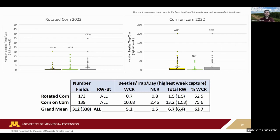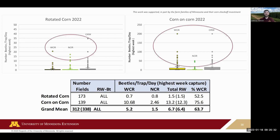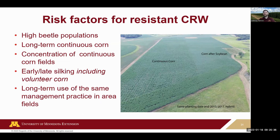Bruce has a good table summarizing what happens with continuous versus rotated corn. You can have up to about 10 beetles per trap per day in continuous corn fields with western corn rootworm, whereas in rotated corn it's just 0.7. For northern corn rootworm in rotated corn, numbers are similar; you still see an increase in northerns going to continuous corn, but definitely not as much as with westerns. Your risk factors for BT-resistant corn rootworm include high beetle populations — more individuals means higher chance of a resistance trait getting selected for.